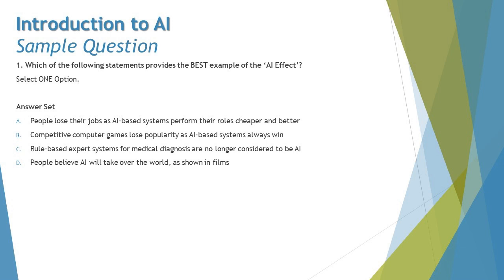Looking at the options: Option A says people lose their jobs as AI-based systems perform their roles cheaper and better. Now, people in many occupations may lose their jobs to AI-based systems, but this is simply the progress of industry and technology — not the AI effect.